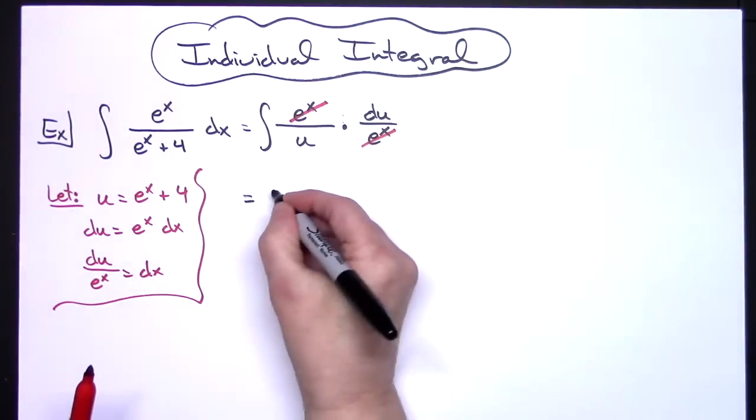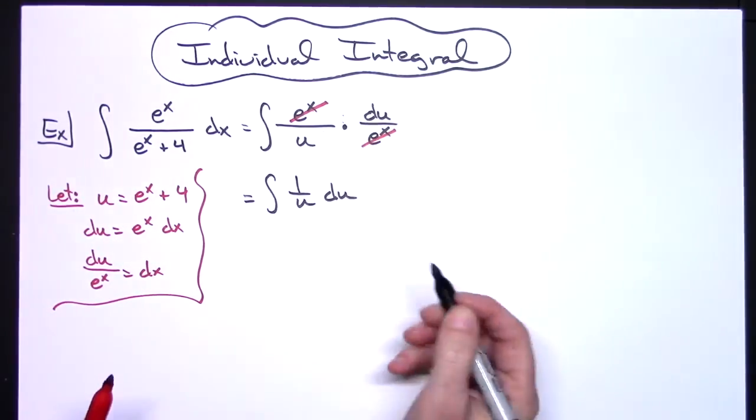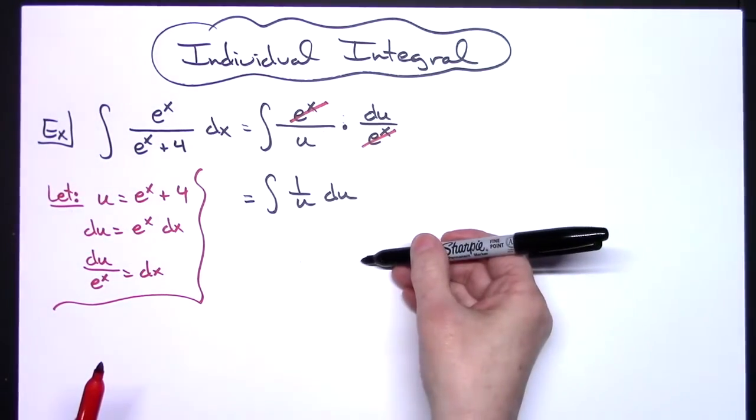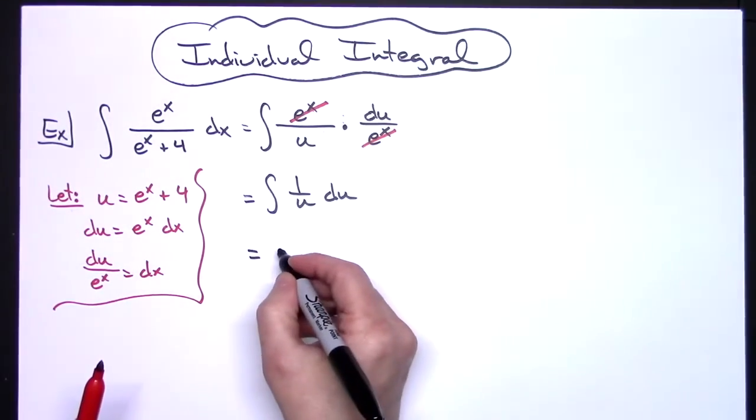All right, I'll be left with the integral of a 1 over u du. I am now all in terms of u, and this should be memorized as the natural log absolute value of u. So we'll integrate that really simple.